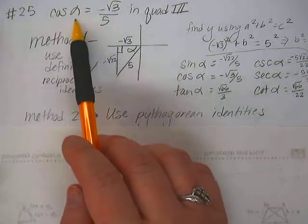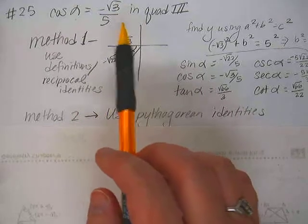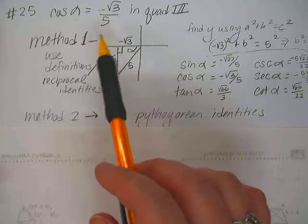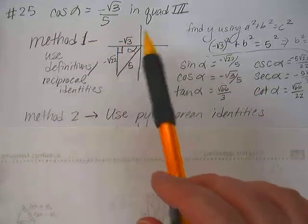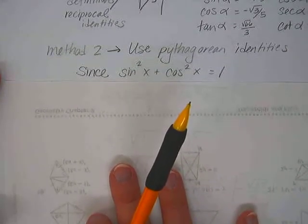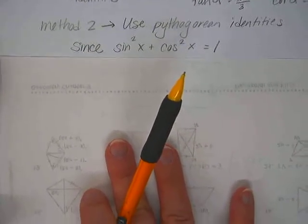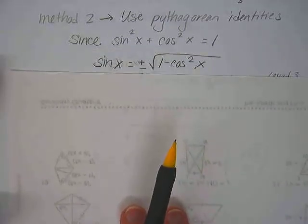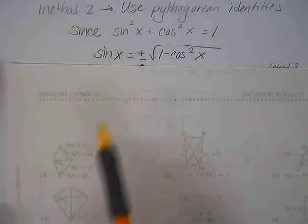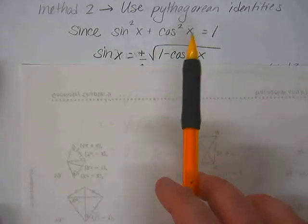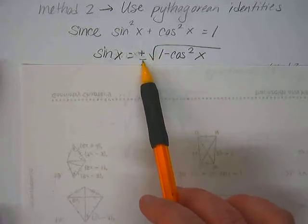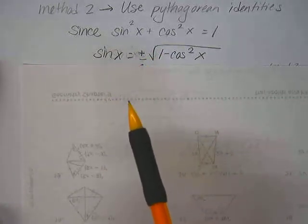So if we do the same problem using Pythagorean identities instead, we have cosine. So the most logical Pythagorean identity to use would be the one that has sine and cosine in it, and then solve it for sine, correct? So I've kind of written out this already, so I'm just going to go step by step through it. So there's our Pythagorean identity, sine squared x plus cosine squared x equals 1, and we can solve that for sine. So solving that for sine would mean subtracting the cosine from both sides, and then square rooting.